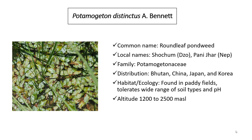Potamogeton distinctus is commonly known as Round Cliff Pond Weed and locally known as Shokchum in Dzongkha and Panijar in Nepali. It belongs to the family Potamogetonaceae. It is widely distributed in Bhutan, China, Japan and Korea. It is found in paddy fields and can tolerate a wide range of soil types and pH. The altitude range for the weed is 1200 to 2500 m above sea level.